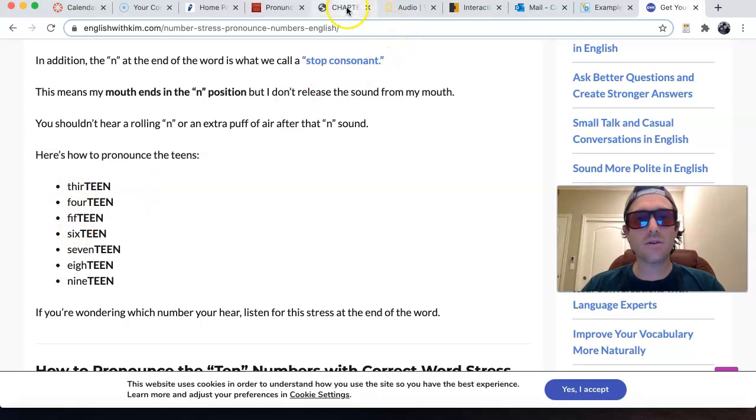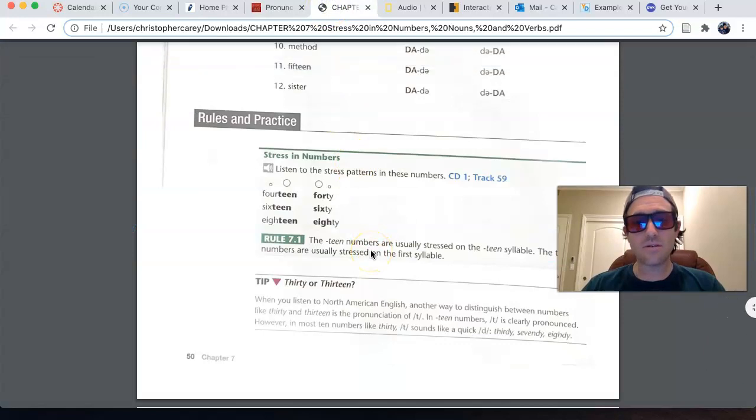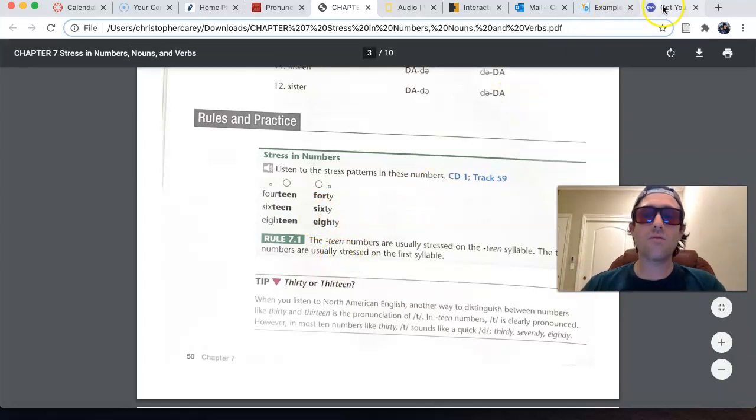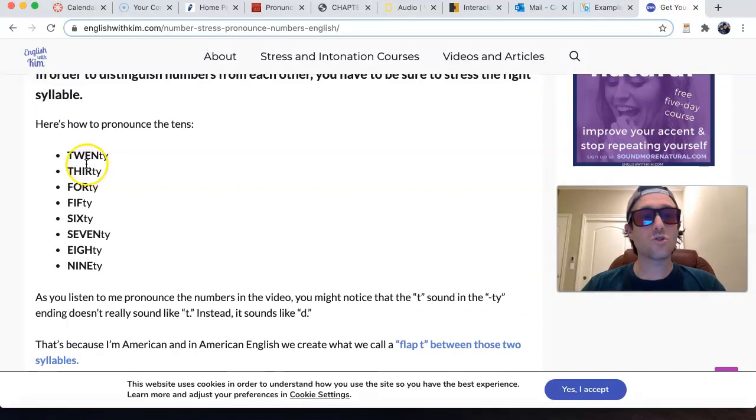Now, on the other hand, numbers in the tens place, like 30, 40, 50, so on, are usually stressed on the first syllable. So for example, 20, 30, 40, 50, 60, 70, 80, 90.